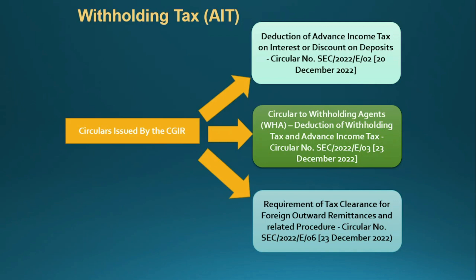The second circular is on all payments made by withholding agents. Therefore, any payment not addressed in the first and third circulars must comply with the second one — the circular to withholding agents on deduction of any payment, also published on December 23rd, 2022. In all these circulars, the department has explained what are the withholding tax liable payments, what are the exempt payments, how to deduct withholding tax, how to pay withholding tax to the Inland Revenue Department, how to obtain registration, what documents to keep, and how to issue a withholding tax certificate to the withholdee. Please comply with these three circulars regarding withholding tax imposed under Section 84, 84A, and Section 85.